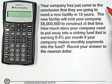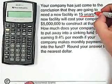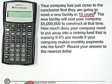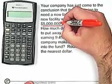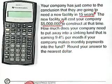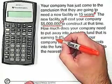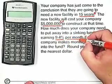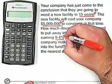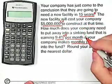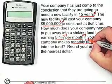Going back to the problem: we need a new facility in 15 years, so we'll use 15 years for our N. The new facility will cost $5 million to construct, so this is our future value. The fund is earning 9.4% per month — this is our interest rate and our compounding period — and monthly payments, so this is our PY.